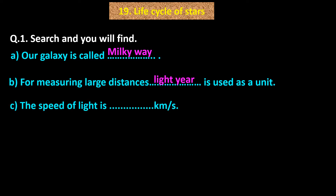C. The speed of light is dash dash dash kilometer per second. Answer: 300,000. C. The speed of light is 300,000 kilometer per second.